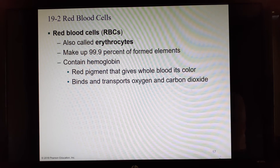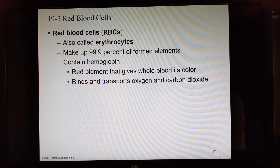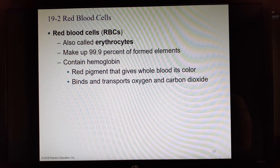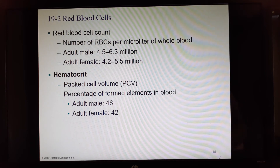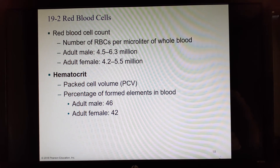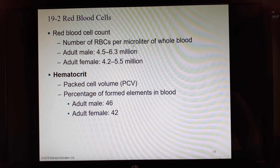Hemoglobin changes color depending on whether it is bound to oxygen or not. Without oxygen, it is a dark burgundy wine color — it is never blue. When bound to oxygen, it turns bright fire engine red. In your body, you have between 4.2 million (females) to 6.3 million red blood cells per microliter. A microliter is one one-thousandth of a liter; it takes five microliters to make a drop.